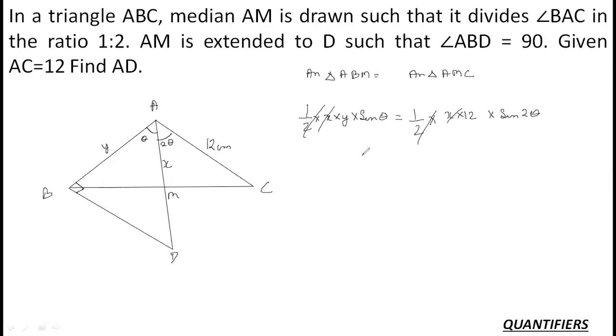Half and half gets cancelled out, x and x gets cancelled out. Now, what is sin 2 theta? Sin 2 theta is 2 sin theta cos theta. So basically, the value of y comes out to be 2 sin theta cos theta into 12. Y is equal to 24 cos theta, because sin theta and sin theta gets cancelled out. I have y into sin theta is equal to 12 into 2 sin theta cos theta. So sin theta, sin theta cancelled out, and y is equal to 24 cos theta.